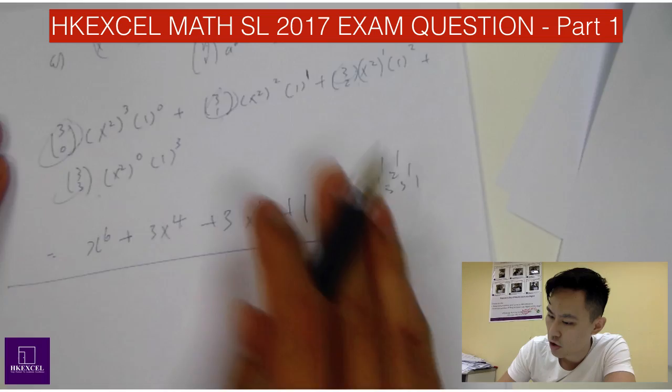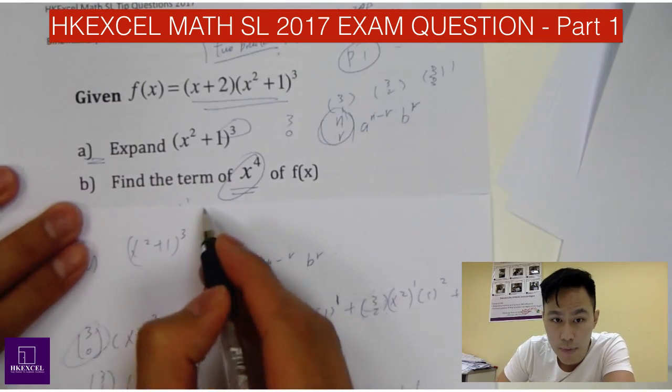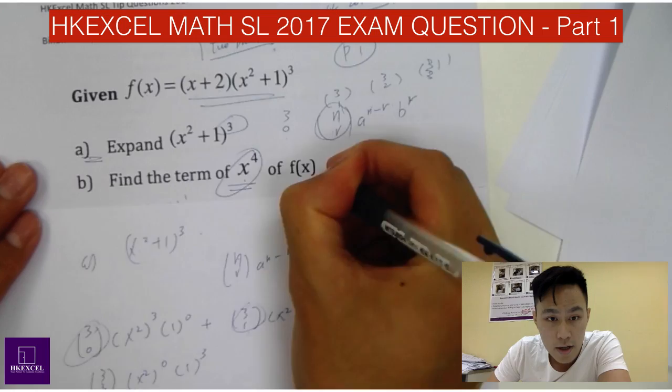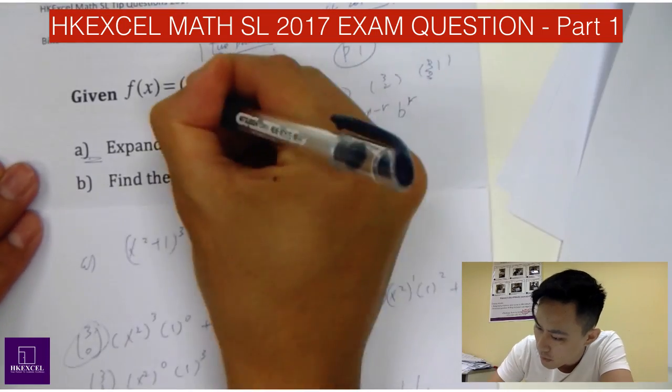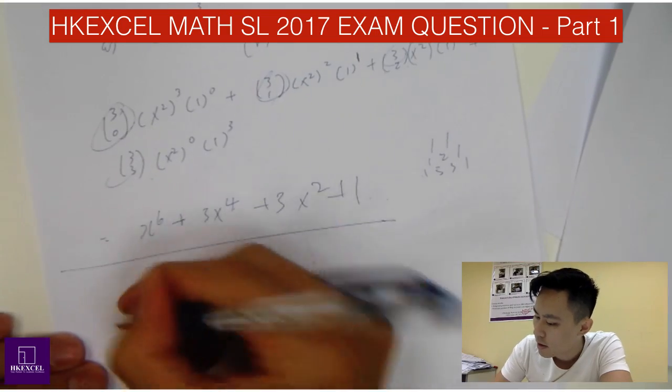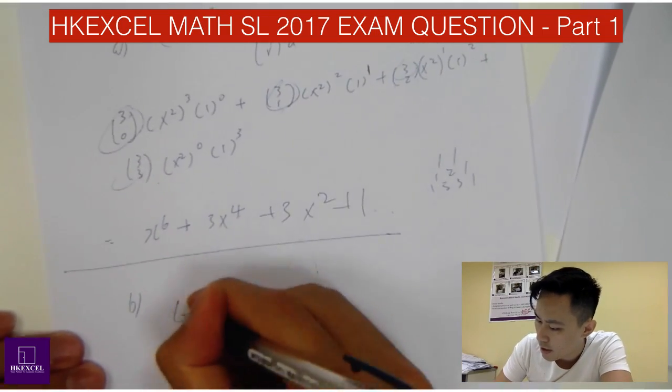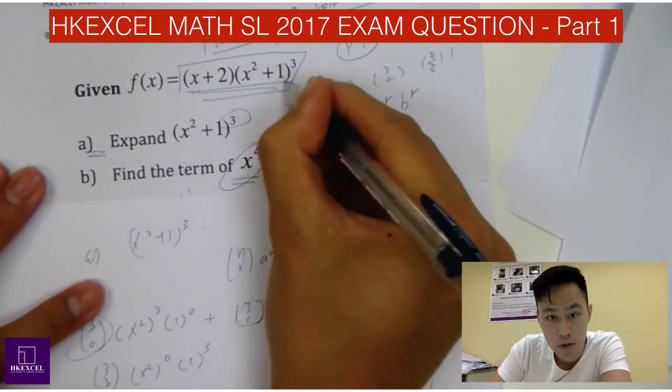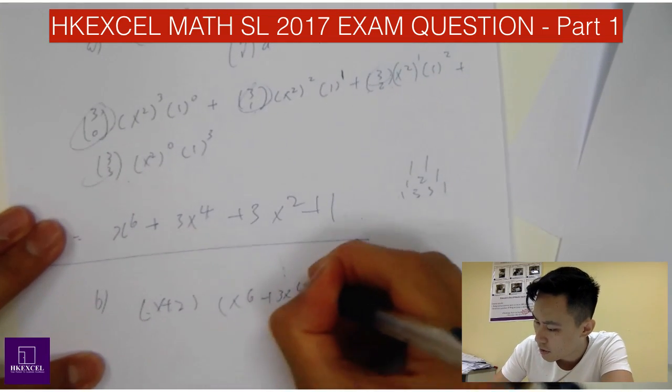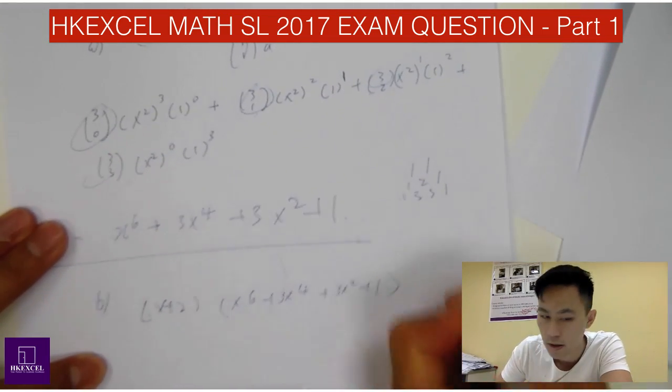So you got the expanded term for a and for question b, find a term of x^4 of f(x). So x power 4 of the f(x) is 2 bracket. Not this one. So first you write (x+2) and also (x²+1)³, which is expanded like this: x^6 + 3x^4 + 3x² + 1.